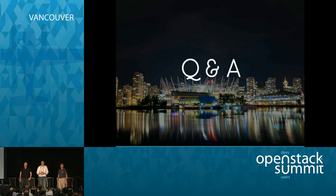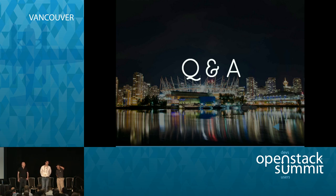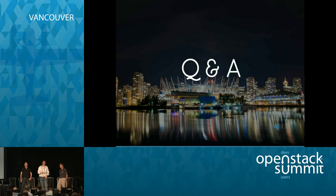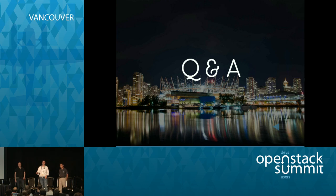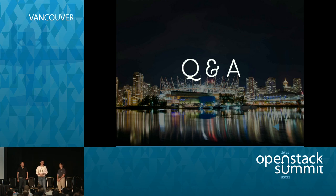Q&A: On SDN integration — Manila integrates explicitly with the Neutron API, not with any vendor-specific SDN technology. Whether you're using NovaNet or Neutron with an ML2 plugin leveraging Open Daylight, Cisco, Juniper, or Arista, that's all abstracted by Neutron. In some sense, we support all SDN providers that support Neutron. The power of integrating with open standards is that the community innovates at its own pace and we take advantage of that.